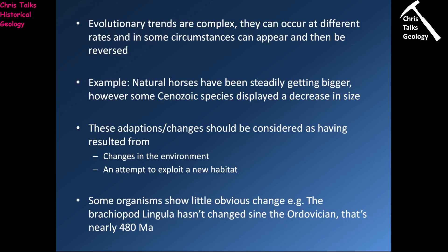Evolutionary trends are quite complex. They can occur at different rates, and in some circumstances they can appear and then actually be reversed. An example would be natural horses, which have been steadily getting larger over time. However, at some points during the Cenozoic, we actually see horse species beginning to get smaller. So on the whole the general trend has been towards getting bigger, but every once in a while we'll see a reversal in that trend — probably as a result of some change in food availability, for instance.